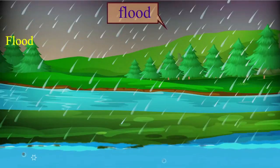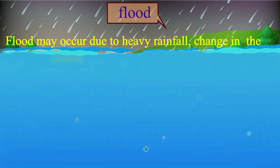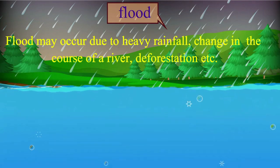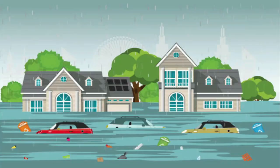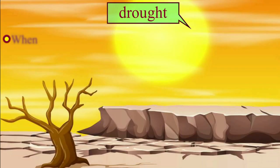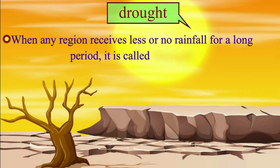Flood may occur due to heavy rainfall, change in the course of a river, deforestation, etc. It causes great destruction to life and property. When any region receives less or no rainfall for a long period, like several months or a year, it is called drought. Drought creates scarcity of food and water.